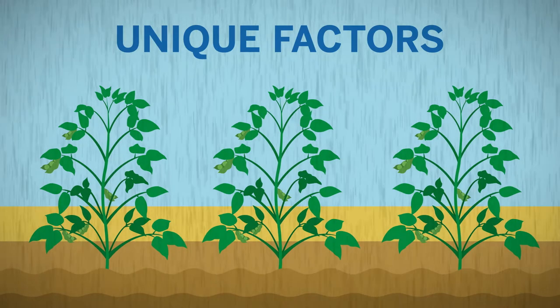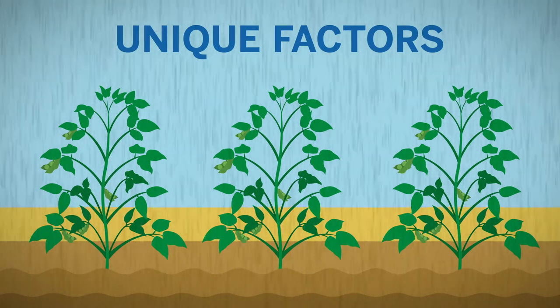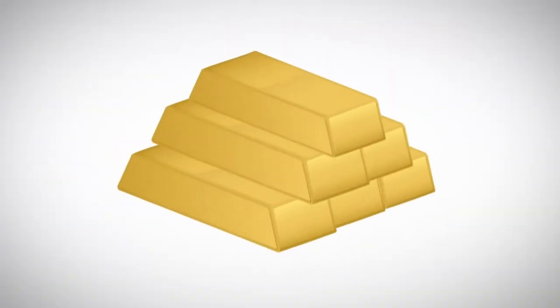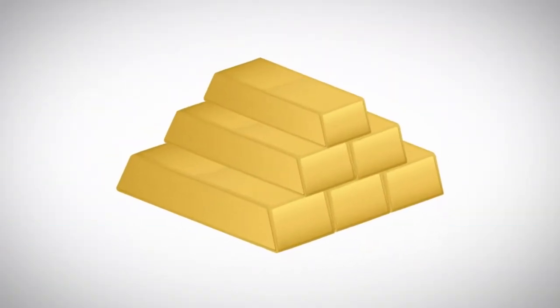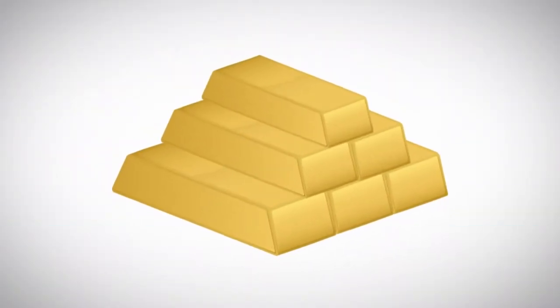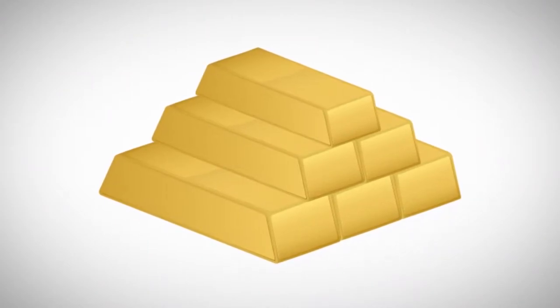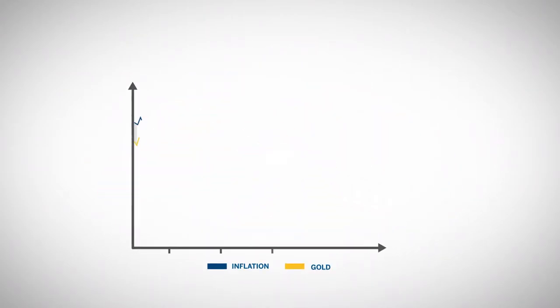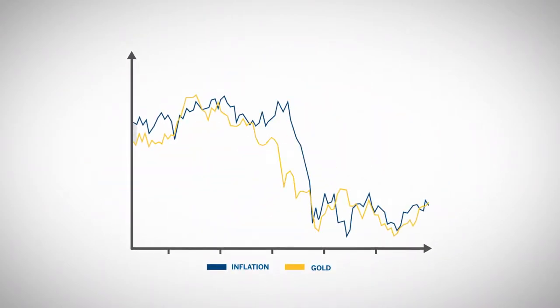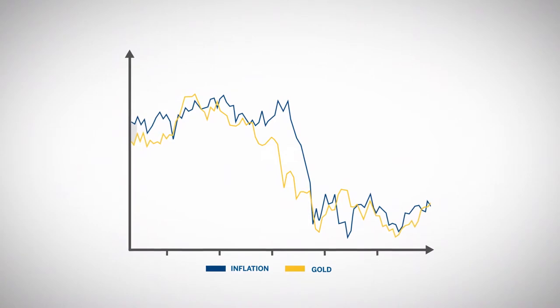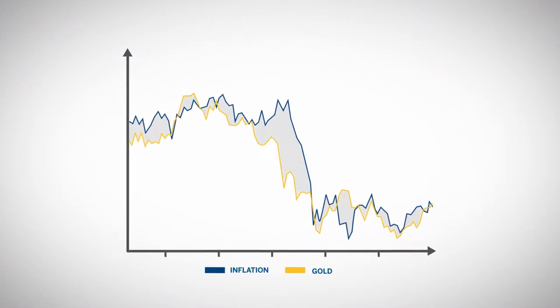This can fluctuate from one year to the next. Weather will play a lesser role in the supply of gold, where mining activities are much less affected by weather. Conversely, gold is much more affected by inflation expectations than agricultural commodities.